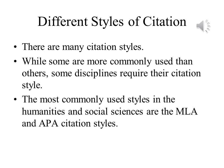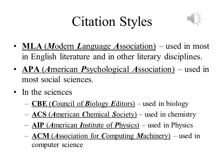In the humanities and social sciences, the two styles that are the most common are MLA and APA citation styles. MLA is the style specified by the Modern Language Association, used in English literature and other literary disciplines. APA refers to the American Psychological Association, and their style is used in most of the social sciences. The sciences each have their own style, with CBE used in biology, ACS in chemistry, AIP in physics, and ACM in computer science.